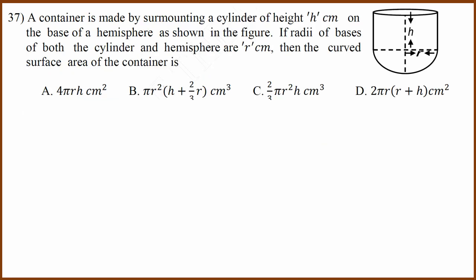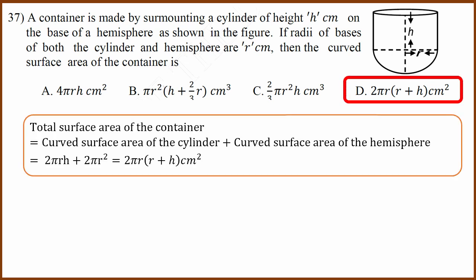Thirty-seventh question: a container with a cylinder body and hemisphere base, with radius R and cylinder height H. The total surface area is the curved surface area of the cylinder (2 pi R H) plus the curved surface area of the hemisphere (2 pi R squared). Adding gives 2 pi R multiplied by (R plus H). That is answer D.